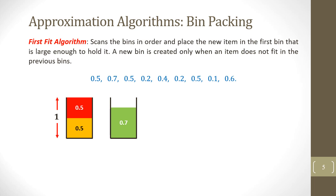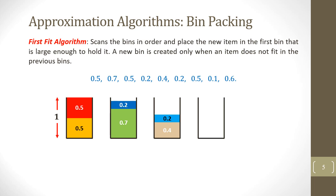Item 4 of size 0.2 will go to the second bin since there is a space of 0.3 in that bin. For item 5 of size 0.4, there is no space in the first bin, so it will go to the third bin. The sixth item of size 0.2 will also go to the third bin. The seventh item of size 0.5 will go into the fourth bin. The eighth item of size 0.1 will go to the second bin, which has a space of 0.1. The last item of size 0.6 will go into the fifth bin since there is no space in the first four bins.